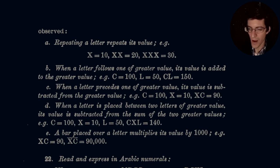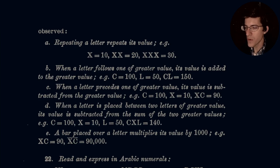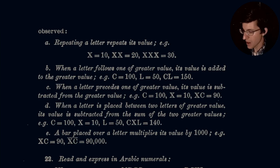If we have C being equal to 100 and L being equal to 50, if you have CL, then you read that as 150.